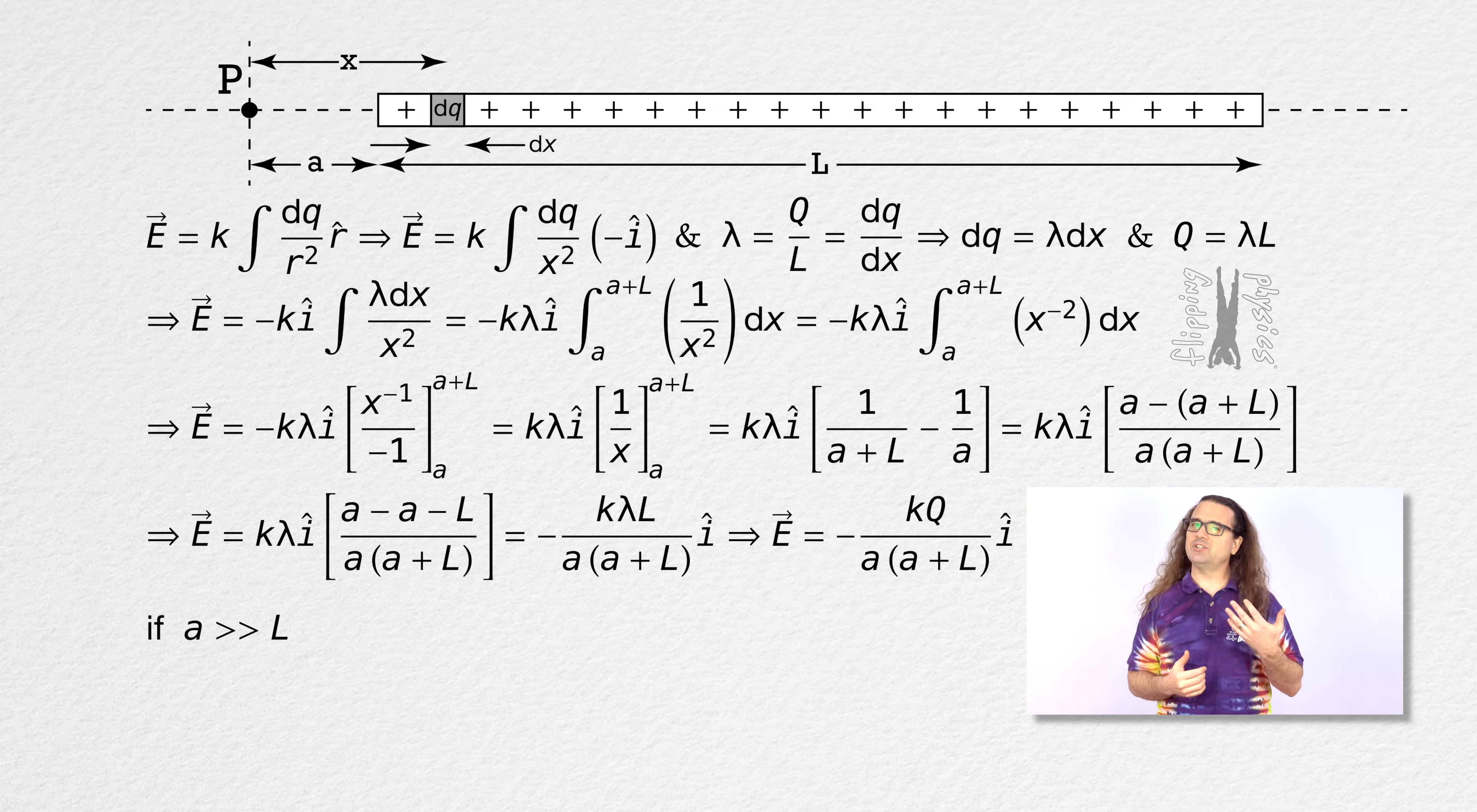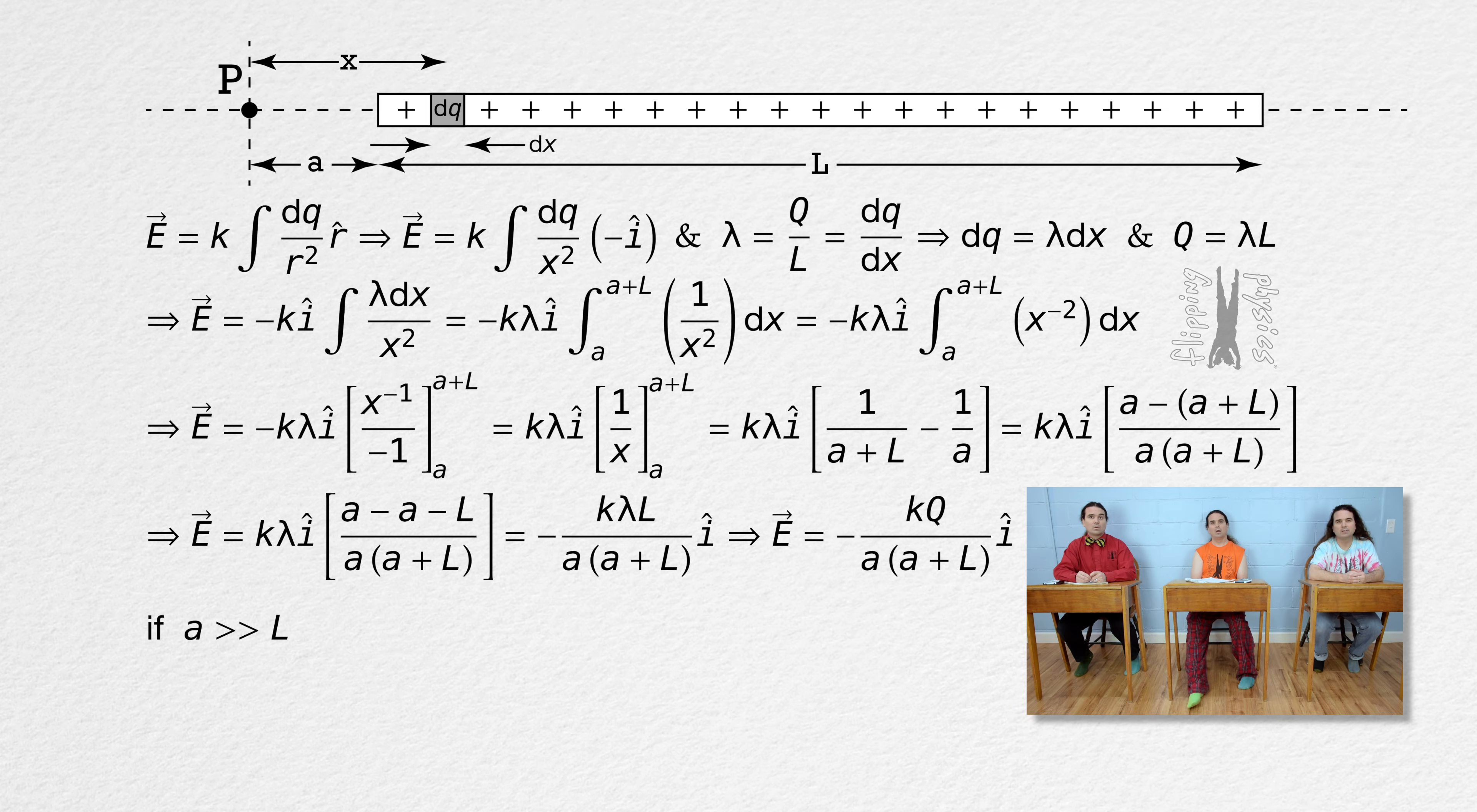Bo, what do you think happens then? If A is much, much larger than capital L, then A plus L is roughly equal to just A. Then the electric field caused by the charged rod equals the negative of the Coulomb constant times the charge on the rod all divided by A squared all times unit vector i.